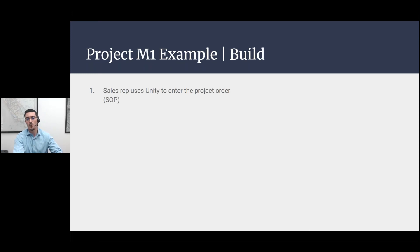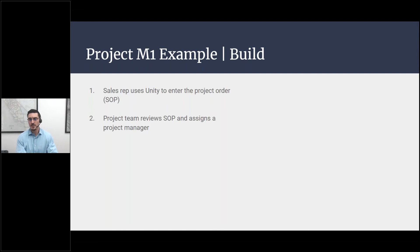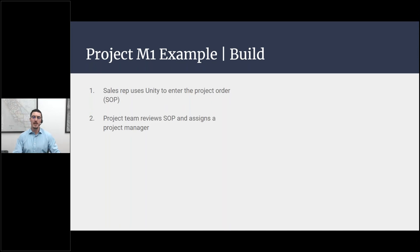So the first phase is the build phase. First, the sales rep uses Unity to enter the project order — the SOP I showed earlier. Then the project team reviews the SOP and assigns the project manager. Reviewing the SOP is critical: every Wednesday our project team — including our VP of Software, plant managers for Sunnyvale and Sacramento, and our senior architect project manager — reviews every approved SOP in the system. If needed information is missing, the sales rep is notified and the SOP cannot go forward to process flow creation.